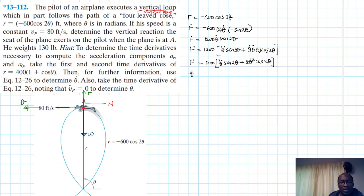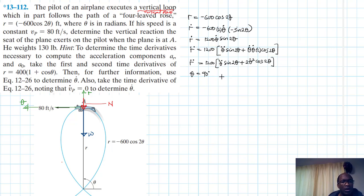Our theta at point A is going to be equal to 90 degrees. Then theta_dot — we don't know what it is, but we can calculate it.